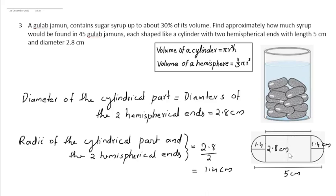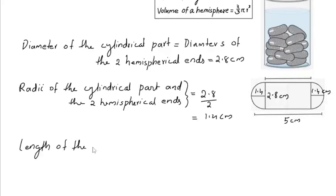To find the volume of the cylindrical part, we need the height of the cylinder. If we subtract 1.4 from both the ends, we get the length of the cylinder, which is the height. 2 into 1.4 is 2.8. Subtracting it from 5, we get 2.2 cm. So the length of the cylindrical part is 2.2 cm.